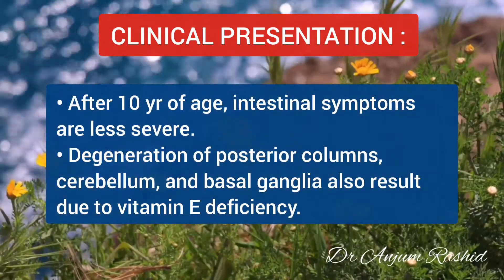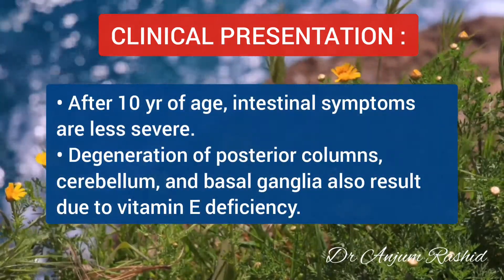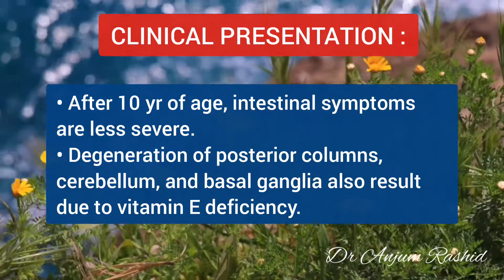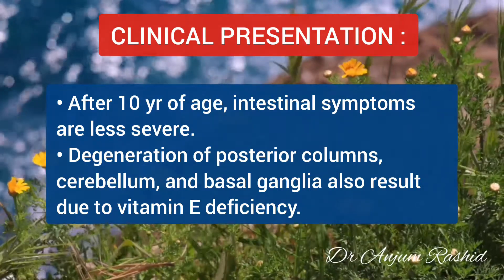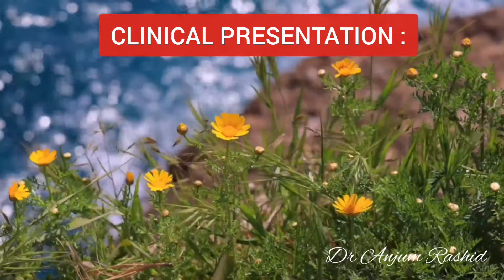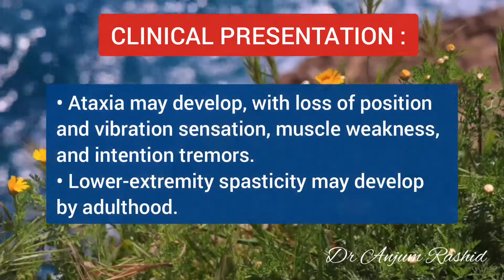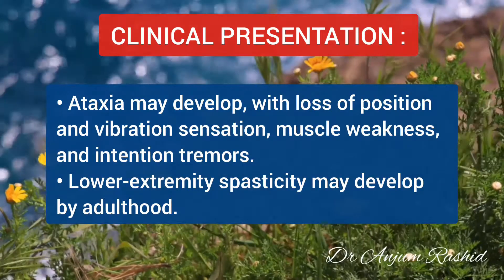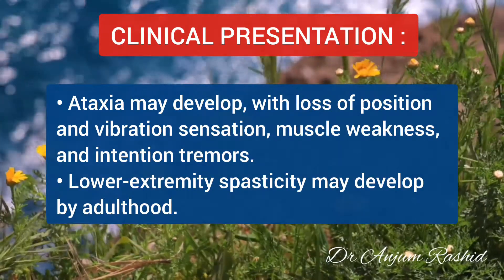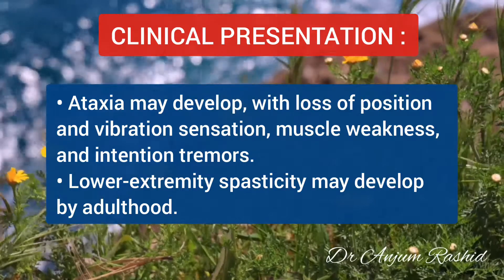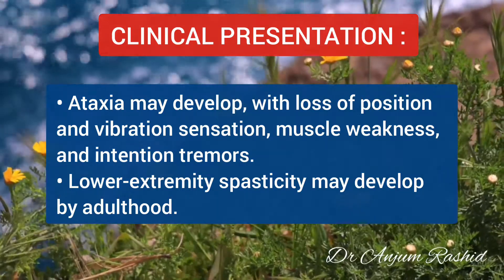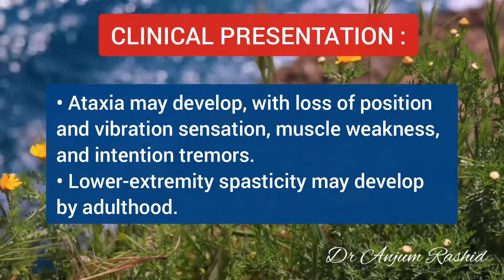After 10 years of age, intestinal symptoms are less severe. Degeneration of the posterior column, cerebellum and basal ganglia results due to deficiency of vitamin E. Ataxia may develop along with loss of position and vibration sensations. There may be muscle weakness and intention tremors, and lower extremity spasticity may develop by adulthood.